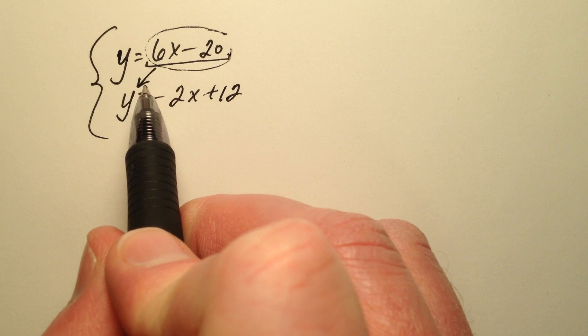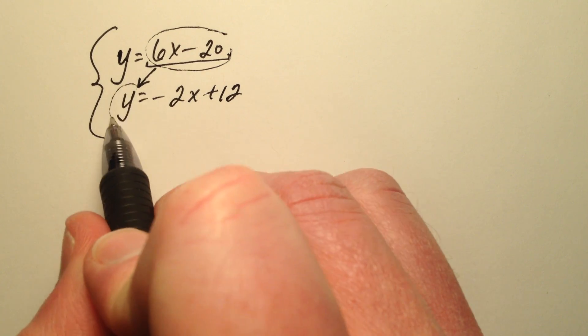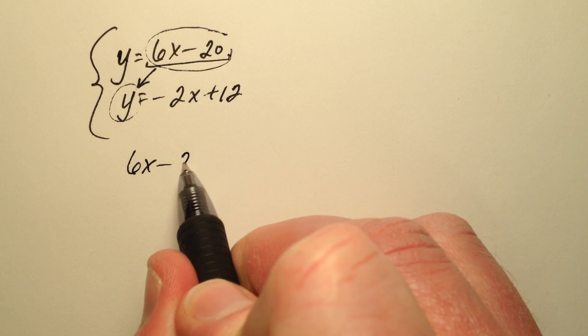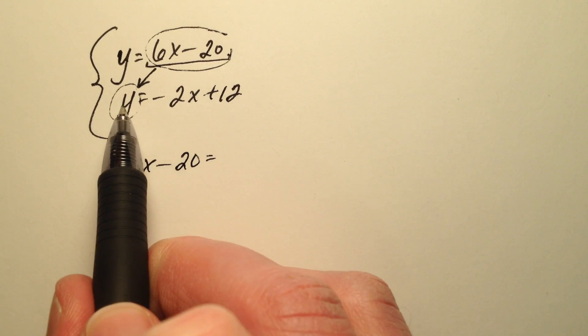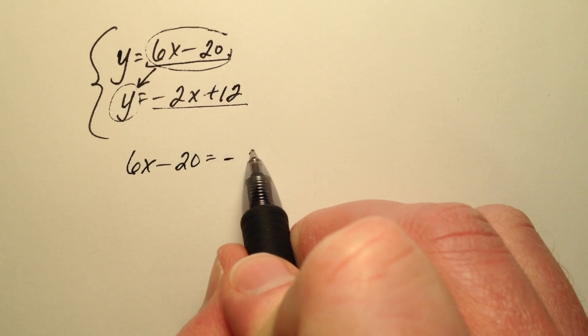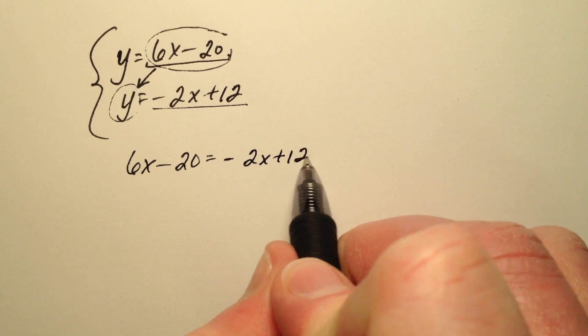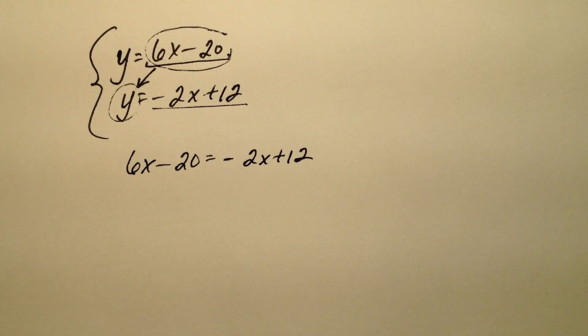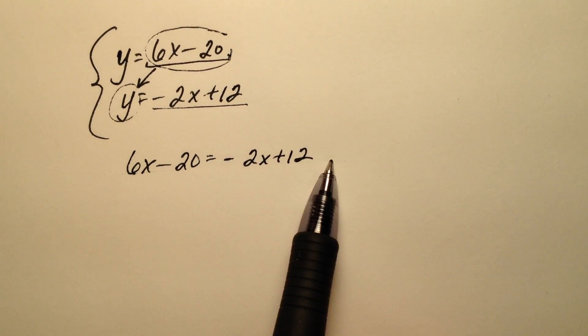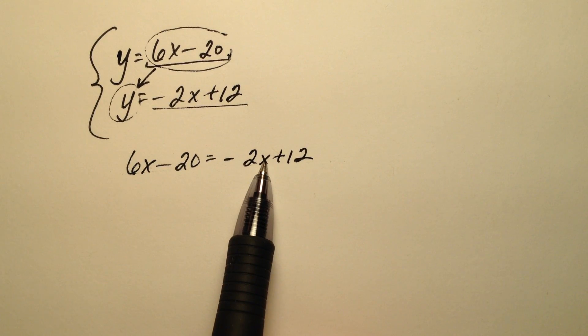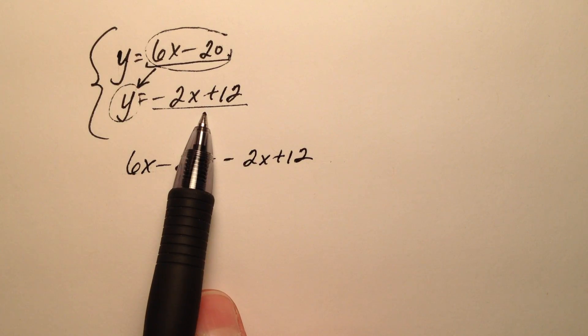So this y now becomes 6x minus 20 and it's set equal to negative 2x plus 12. Now, because of this substitution, I have a single equation with a single variable instead of having two equations with two variables.